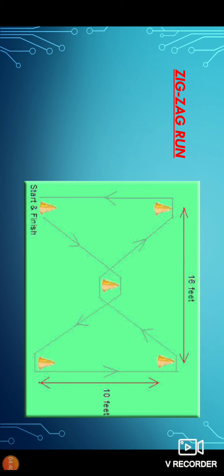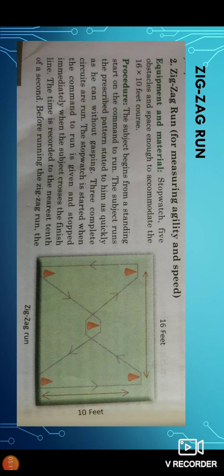He will run towards the middle cone, then to the right downward cone, then to the top right cone, then again to the middle cone, then to the left top cone, and then to the finishing line or finished cone at left down corner. This is the procedure.